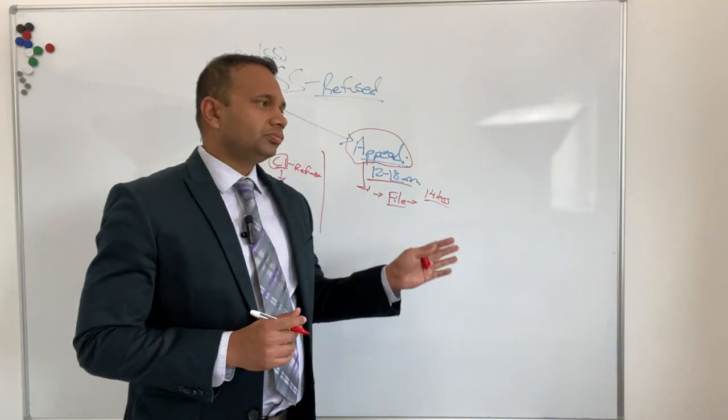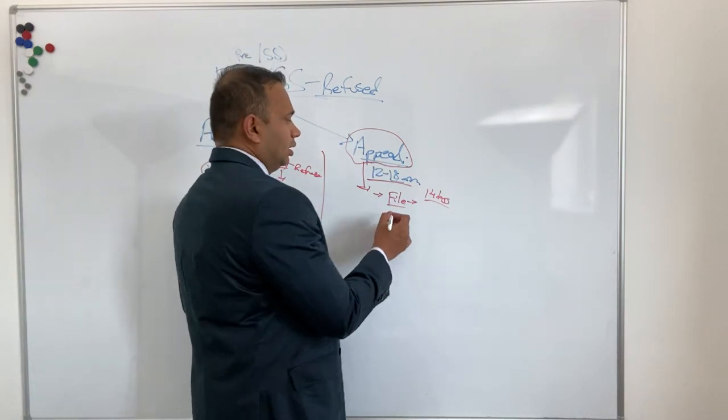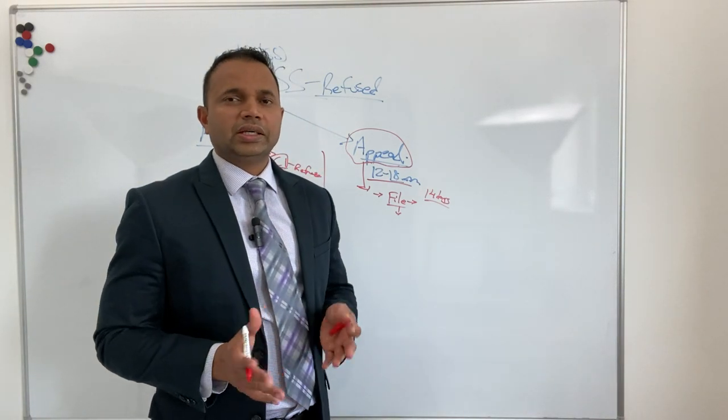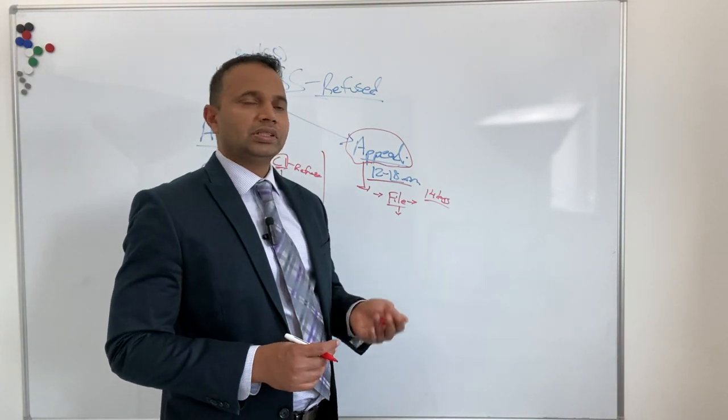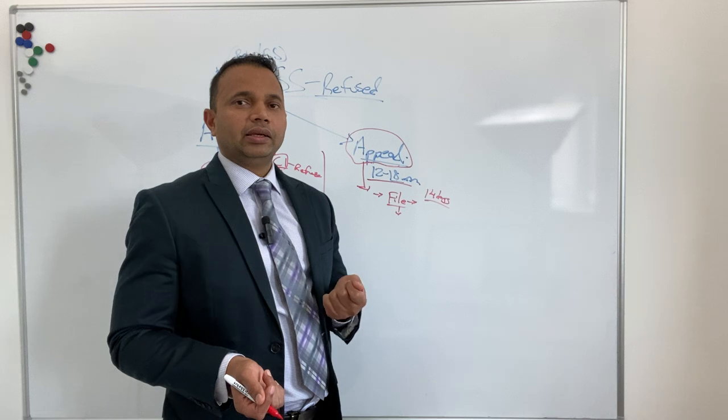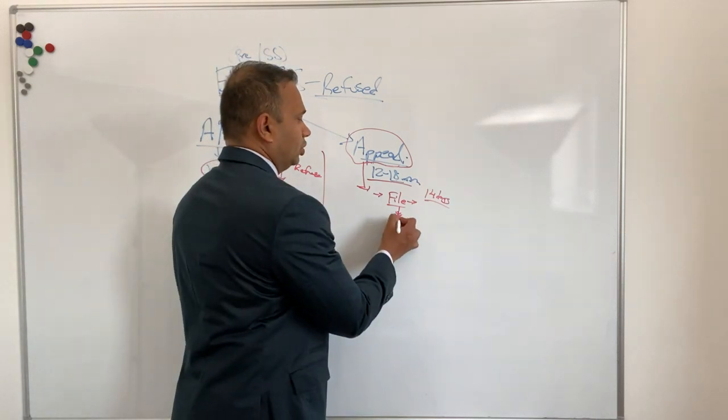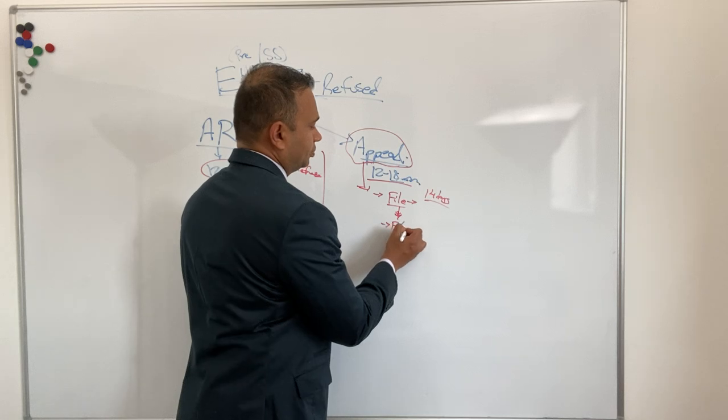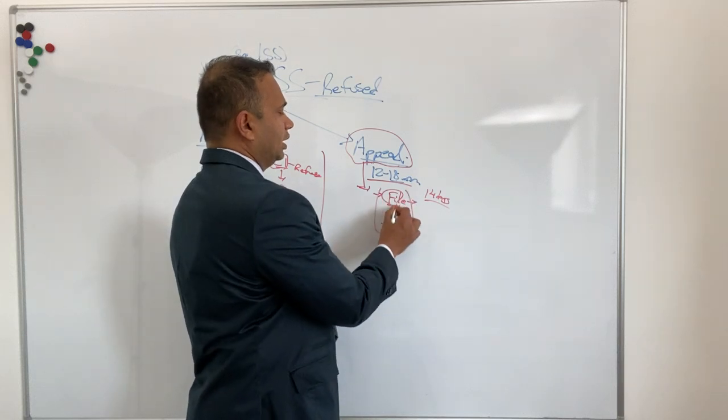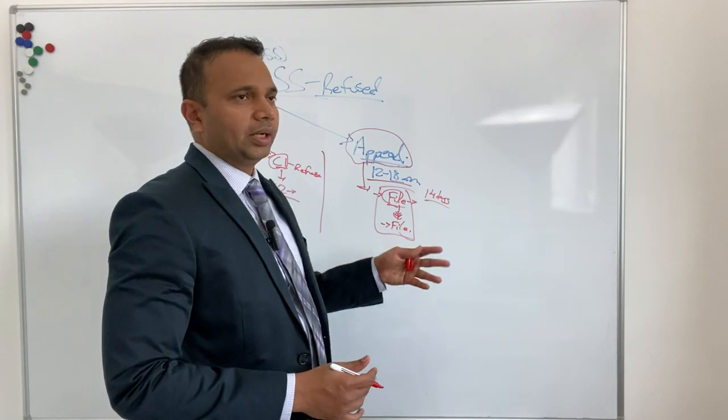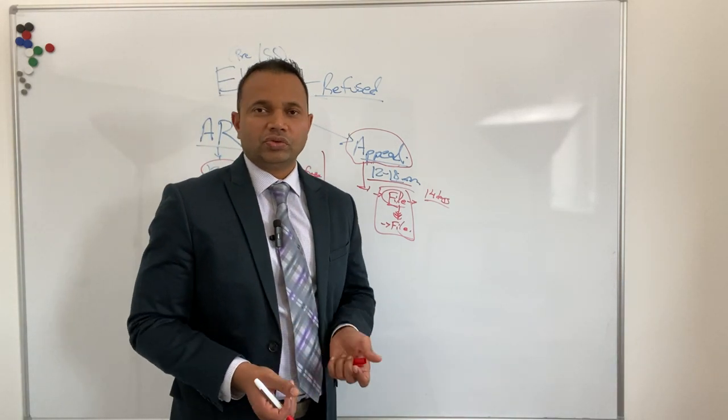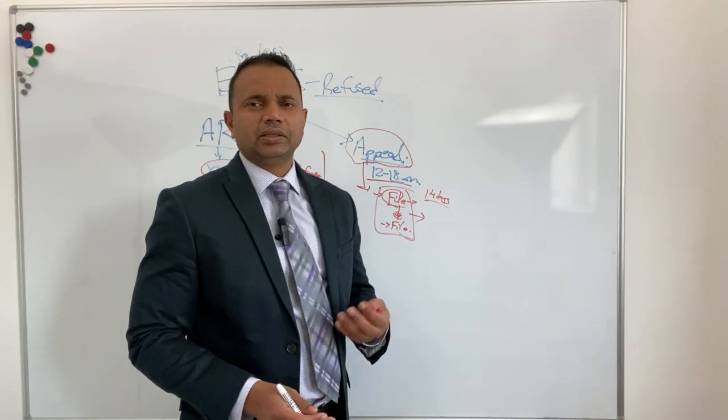Then the appeal is filed. I'll briefly explain the process so you have an idea. Once the appeal is filed, it's lodged on the system. Then you have to file all the documents - whatever are your grounds of appeal. That's an online form. You have a little bit more time to upload your side of the story - witness statements, skeleton argument, grounds of appeal, whatever you want to put.